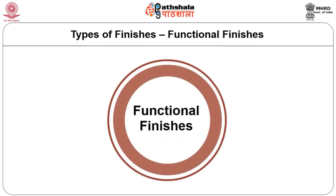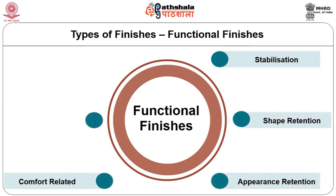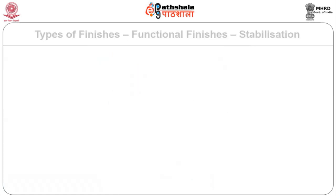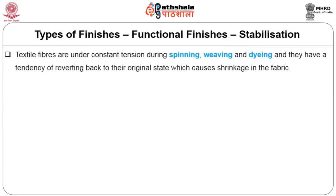The most important finishes are functional finishes. Functional finishes are applied to fabrics to enhance performance in a specific area and can be categorized into stabilization, shape retention, appearance retention, comfort related, biological control and safety related finishes. Sanforization, also called zero finish or shrinkage control finish: textile fibers are under constant tension during spinning, weaving and dyeing, and have a tendency of reverting back to their original state, which causes shrinkage in the fabric.